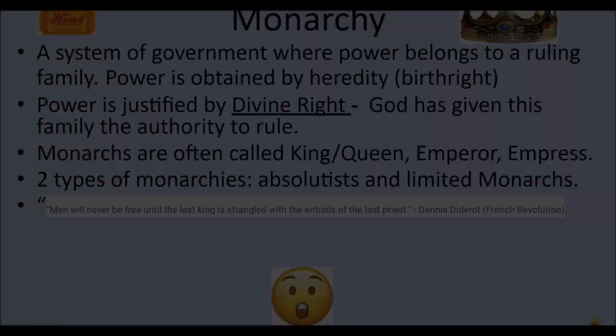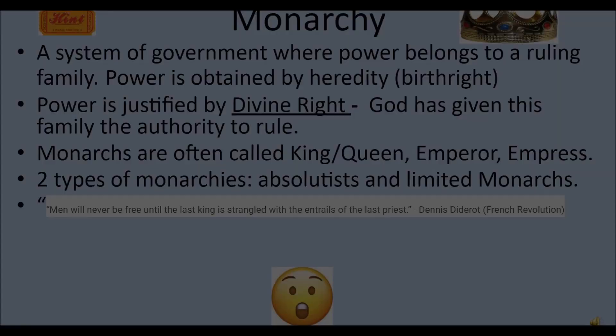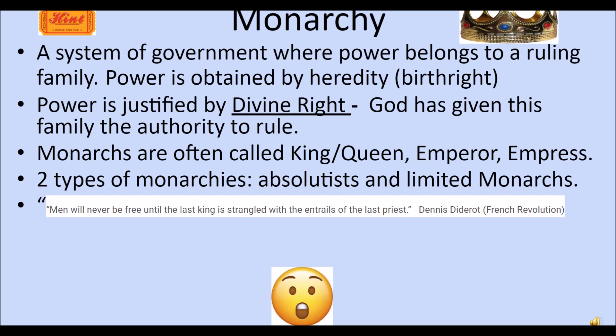A monarchy will probably remind you of watching Hamilton over the summer. It's a system of government where power belongs to a ruling family, obtained by heredity through birthright, and power is justified by divine right — meaning God has given the family authority to rule. There's some kind of absolutism or influence from a divine being. Monarchs are usually called kings, queens, emperors, or empresses. There are two types: absolutist, where there's no constitution and you do whatever you want, or a monarchy limited by a constitution and the rights of the people.